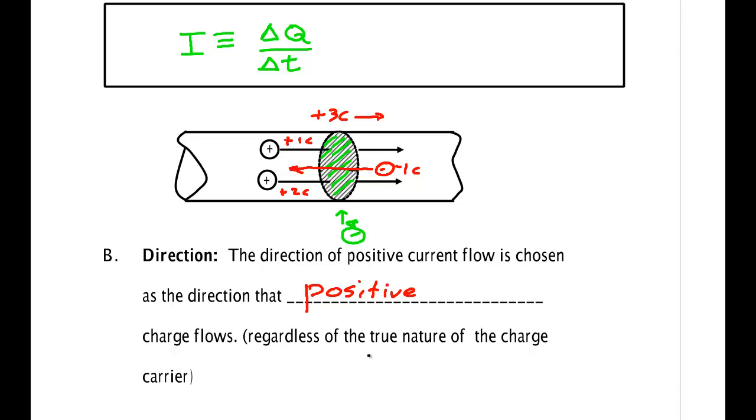Now it could be that the charge that's flowing is all negative, but that wouldn't matter. All these negative charges might be going this way. We would define the current to be in the opposite direction, the direction that positive charge flows.